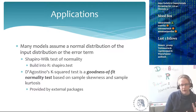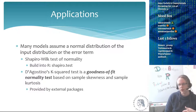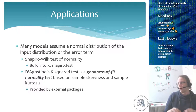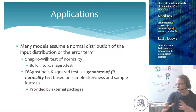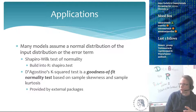Besides that, you have the D'Agostino k-square test, which is a goodness-of-fit normality test based on sample skewness and sample kurtosis. It's provided by external packages. So if you have a distribution which is still kind of normal but has a certain skew or kurtosis, this test can tell you if the distribution you have is good enough to perform a certain statistical test.